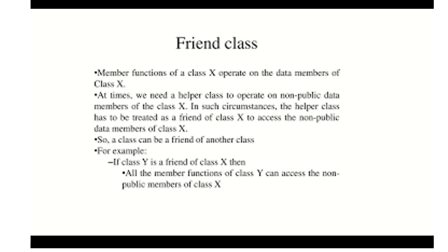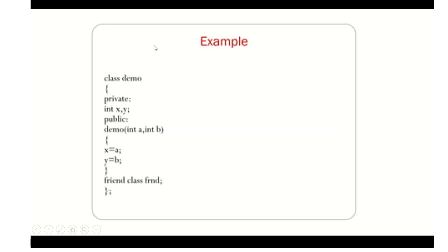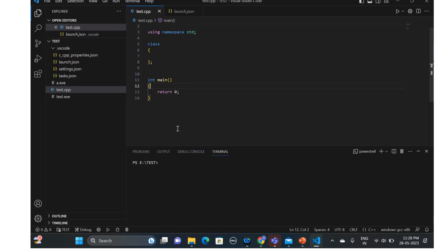Let's see the syntax for using friend class. Say you have a class with some private data members — for example, x and y. You have another class called, say, ClassFriend, and it has a function. If from that class you want to access the private members x and y, you just need to add the syntax: 'friend class ClassFriend' inside the demo class. Let's see this practically in Visual Studio Code.